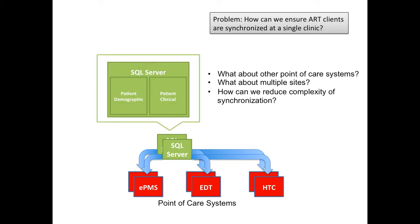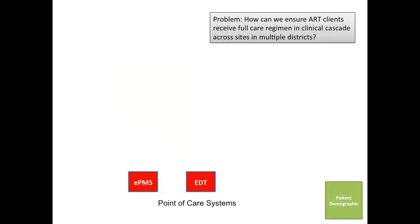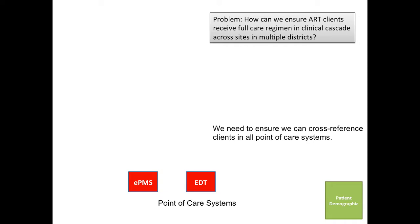To figure out how to do this, let's look more closely at the type of data being synchronized in the SQL server application. One is patient and demographic information, and the other is patient clinical information. We're going to focus first on the patient demographic information. We need to ensure that we can cross-reference clients in all point-of-care systems, whether operating within a single clinic or across multiple clinics.